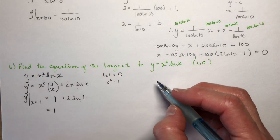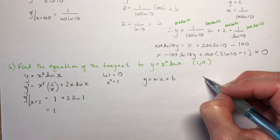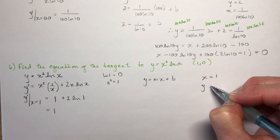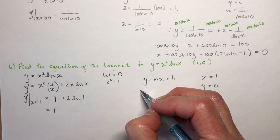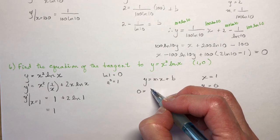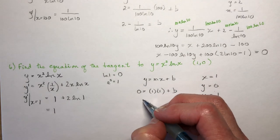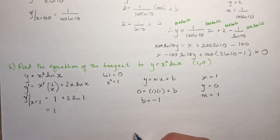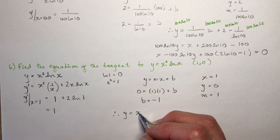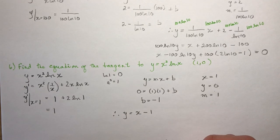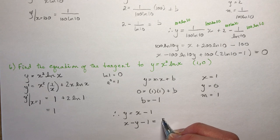With slope 1, x equals 1, and y equals 0, using y equals mx plus b: 0 equals 1(1) plus b, so b equals −1. Therefore y equals x − 1, or in standard form, x minus y minus 1 equals 0.